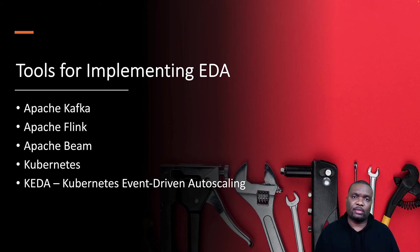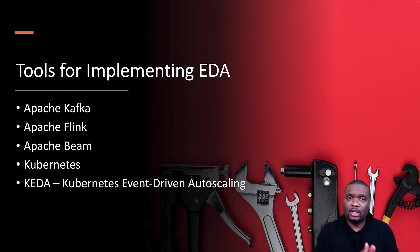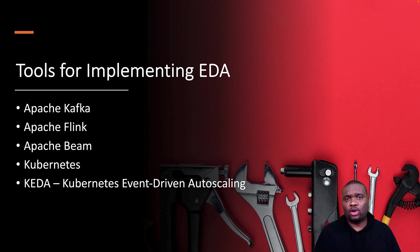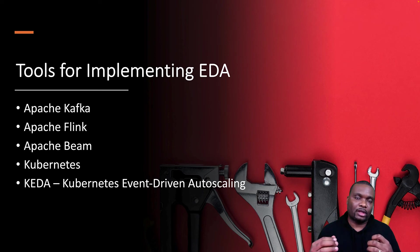Apache Flink does not have a storage component, but it does have a processing component that allows you to unify your batch API and stream processing API into one framework. So if you're doing near real-time processing, which is otherwise known as streaming, you can use Apache Flink. If you're doing batch processing, you can also use Apache Flink. Apache Beam is similar in that it allows you to unify batch processing and stream processing together in one tool.